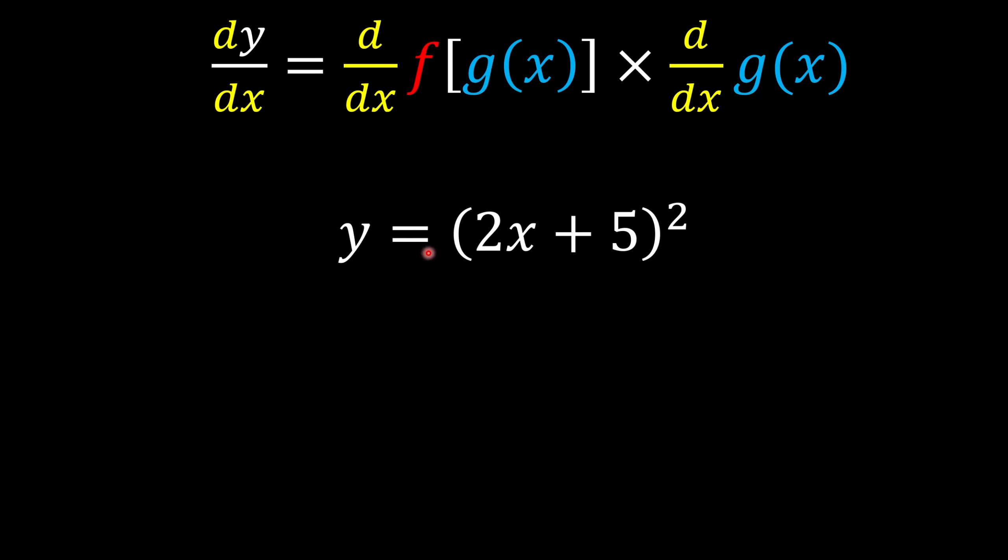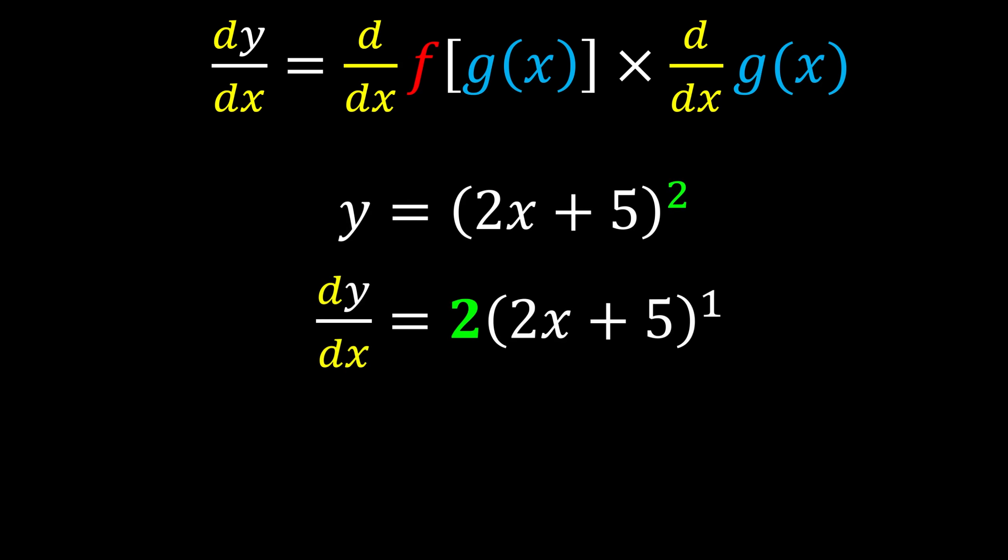We take two, go to the front, and just assume whatever inside the bracket as one variable. So of course, the power is going to be reduced by one. So this is the first part of our derivative.